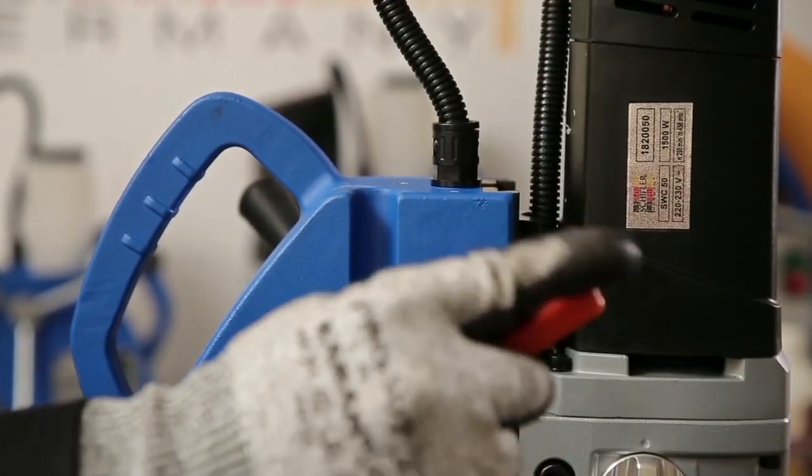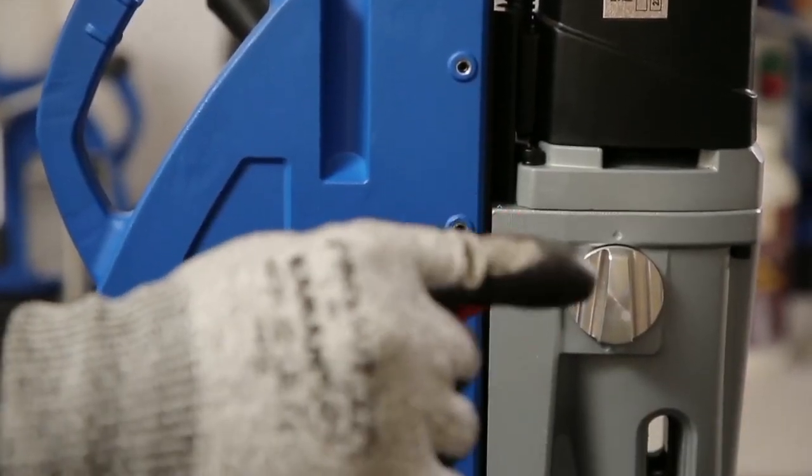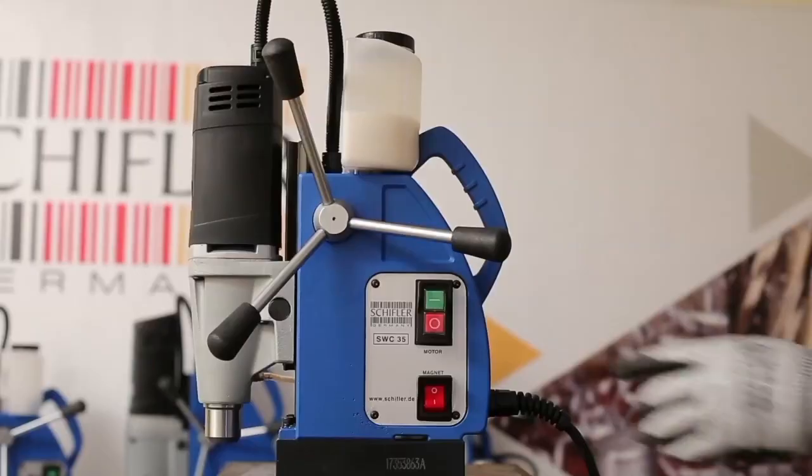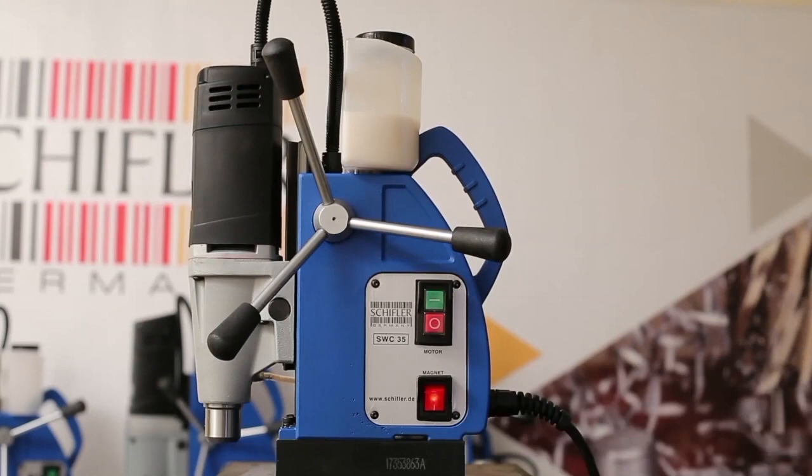Adjust slides. Fix the coolant nozzle into the arbor. Switch on the magnet, followed by the motor on and off switch.